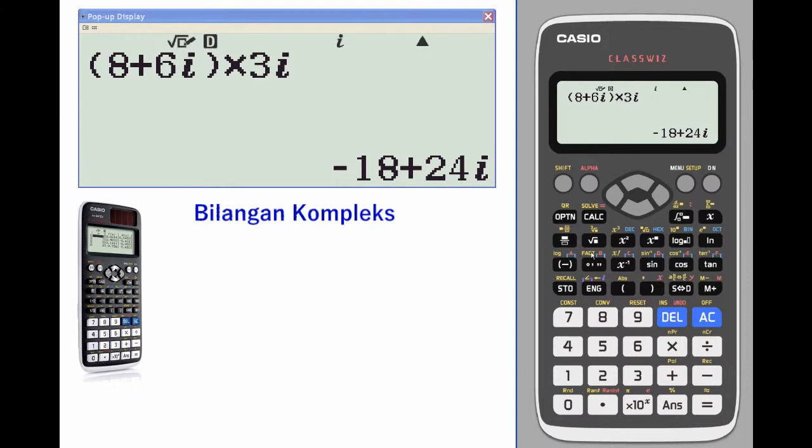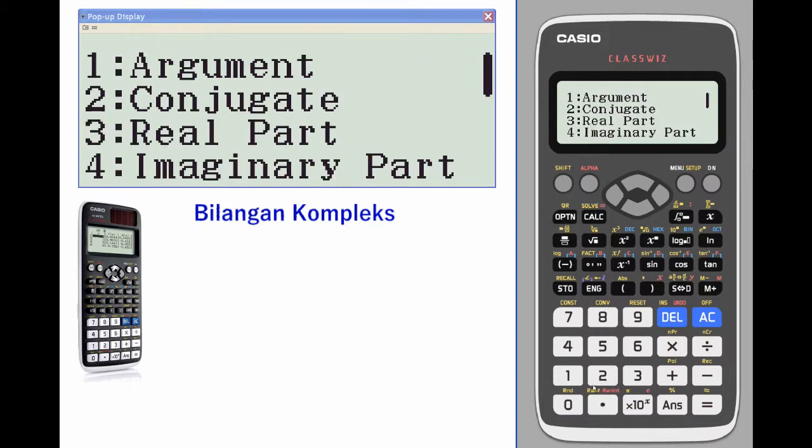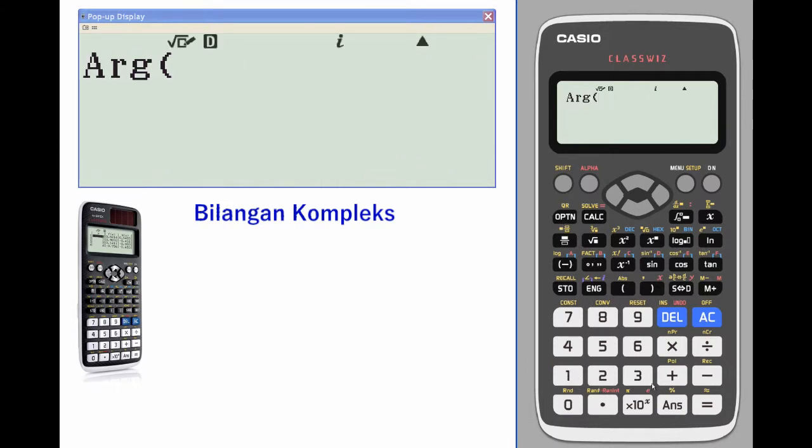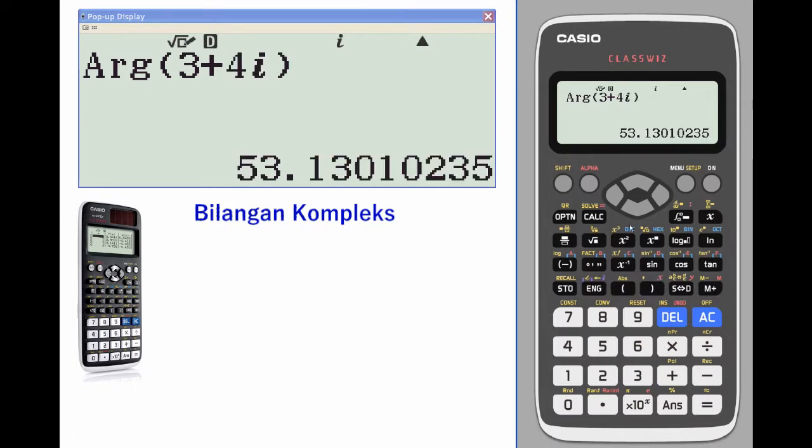So we'll do argument calculation, we'll go with one, three plus four i. It gives me the angle between those two on the complex plane, which is 53 degrees. We're currently in degree mode for that one, so that's where you see the little d. You see the i tells you you're in imaginary mode.